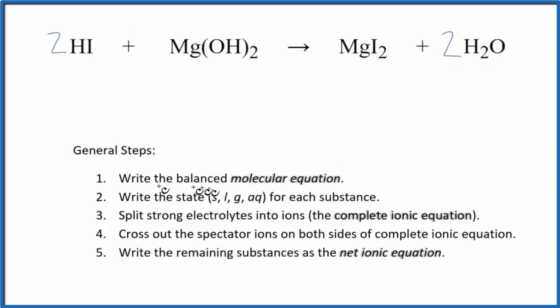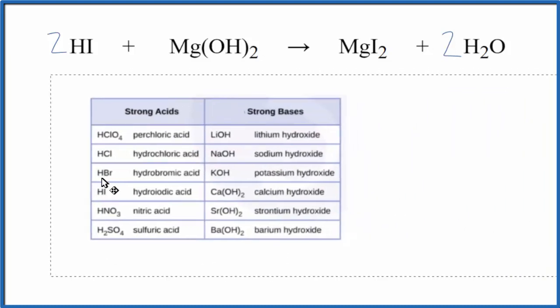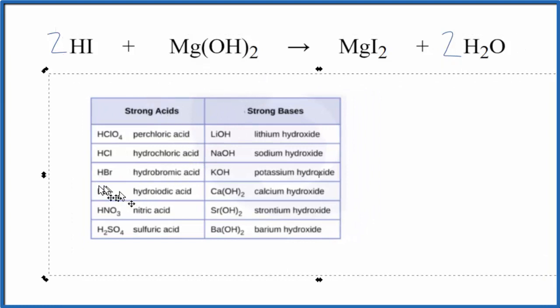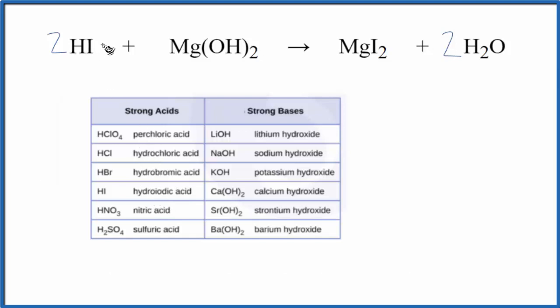Once we have the molecular equation, we can write the states for each substance. This is a helpful table of common strong acids and bases. You can see that HI, right here, is a strong acid. Because it's a strong acid, it's also a strong electrolyte. So we call this aqueous—it'll dissolve or dissociate into its ions.